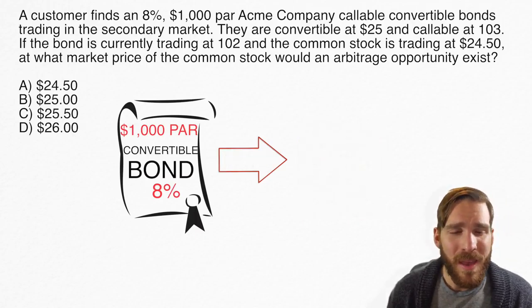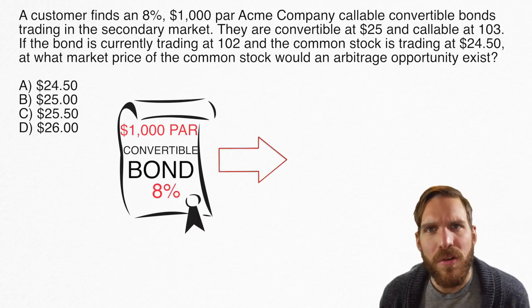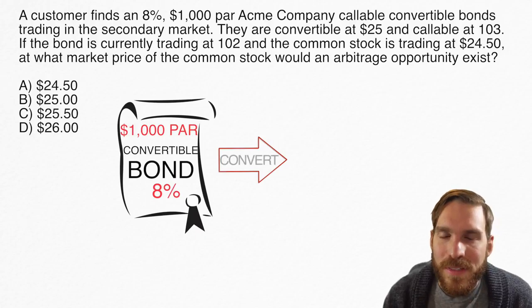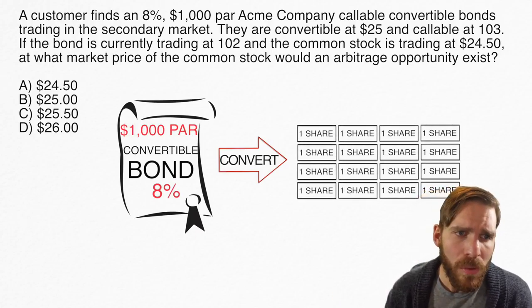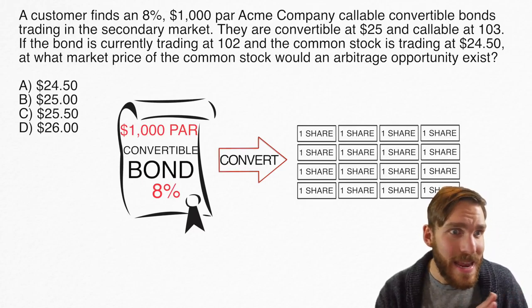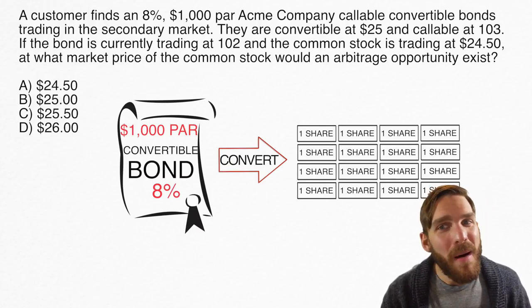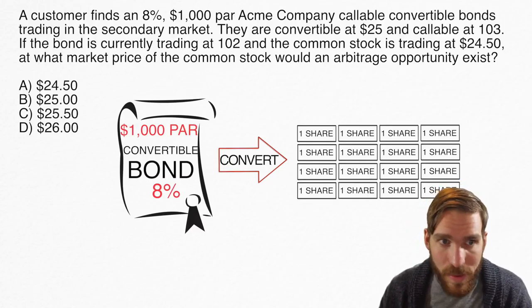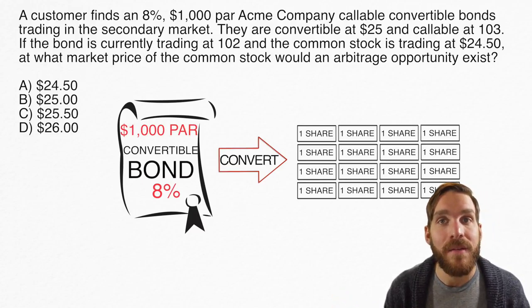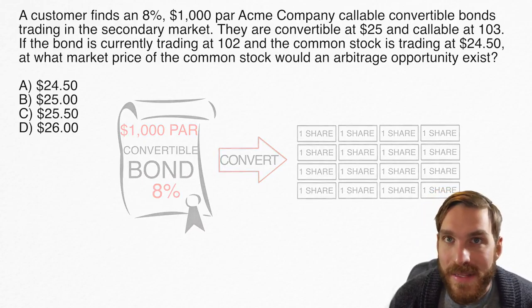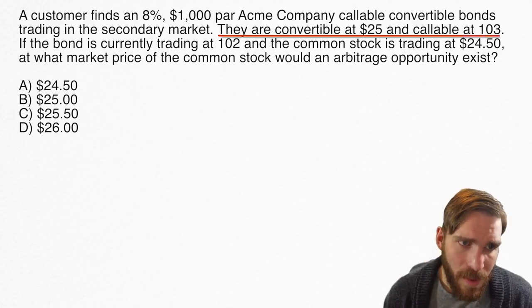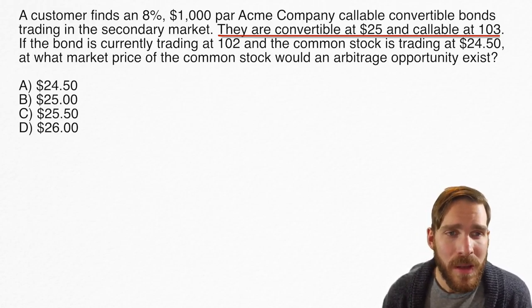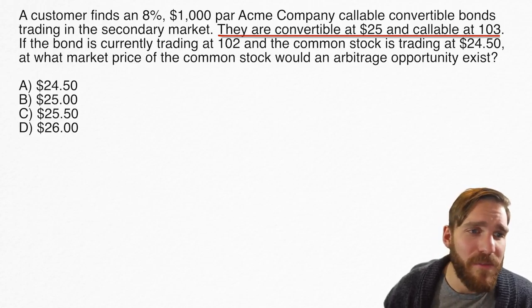The second sentence says they are convertible at $25 and callable at $103. This gets to the additional feature. Convertible bonds can convert themselves into shares of stock of the same company — they start as a debt instrument but can turn into shares. That choice belongs to the bondholder, not the issuer. Now, for arbitrage, the callable feature does not come into play, so we filter that out and focus on the fact that the bond is convertible at $25.